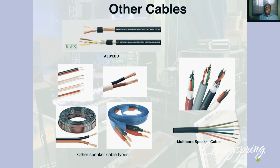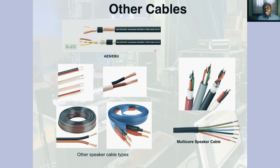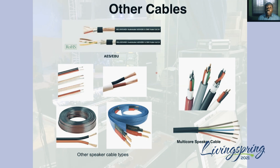We also have multi-core speaker cables — notice there is no shielding in most of these, since they are speaker cables. One example has something to protect it from moisture but it is still a speaker cable. A six-conductor multi-core cable, where each speaker needs two cables, will serve up to three loudspeakers. The final type here is the AES-EBU — these carry digital signals, as you can see with DMX labeled on the cable. They also have shielding to prevent magnetic or electrostatic interference.